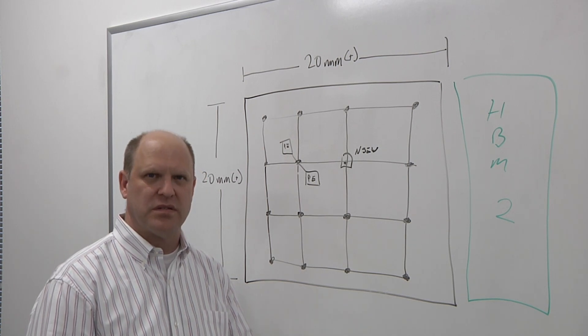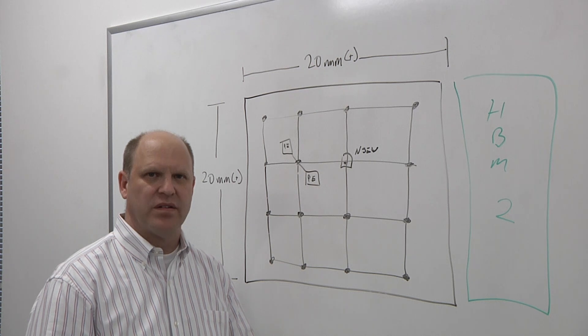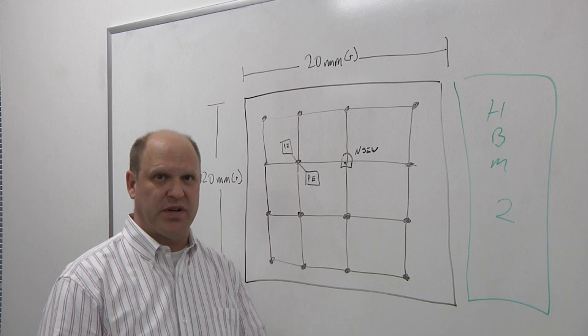So another thing that happens in a training chip is you've got memory scattered around the chip, right? It's not just one big memory. There's little memories tied to little processors. That's correct.